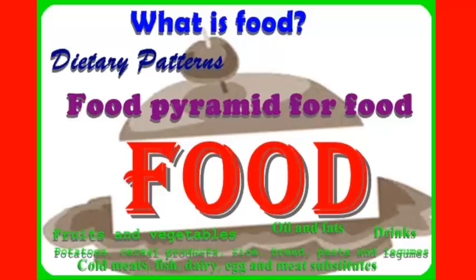Heterotrophic organisms are organisms that obtain their food from other organisms. Organisms that are able to produce organic matter from inorganic substances are called autotrophic. It is a misunderstanding to count the inorganic substances that autotrophic organisms take in as nutrients. Food is all that an organism takes in to keep the metabolism running.